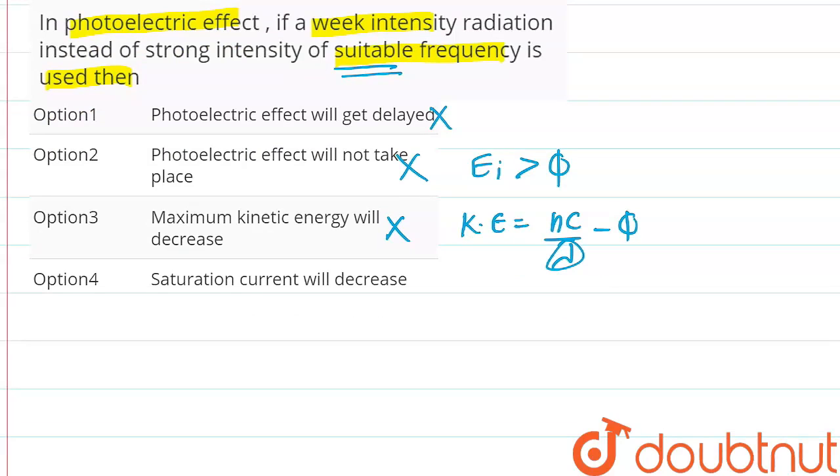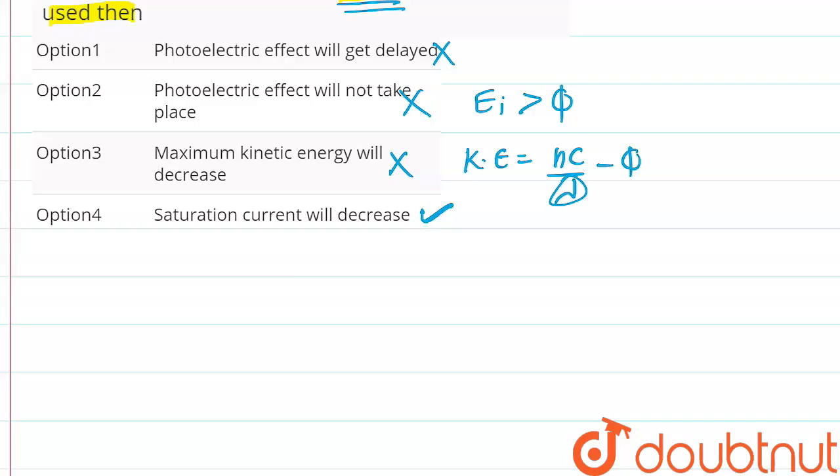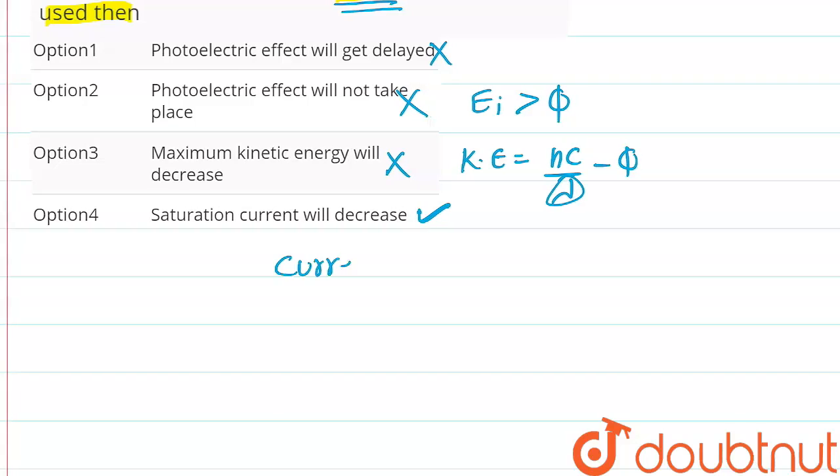Option four is saturation current will decrease. This statement is correct because current is equal to charge upon time, and the number of electrons emitted from the metal is directly proportional to intensity of the radiation. So if the charge increases, the current will increase. Therefore, option four is the correct statement. Thank you for watching.